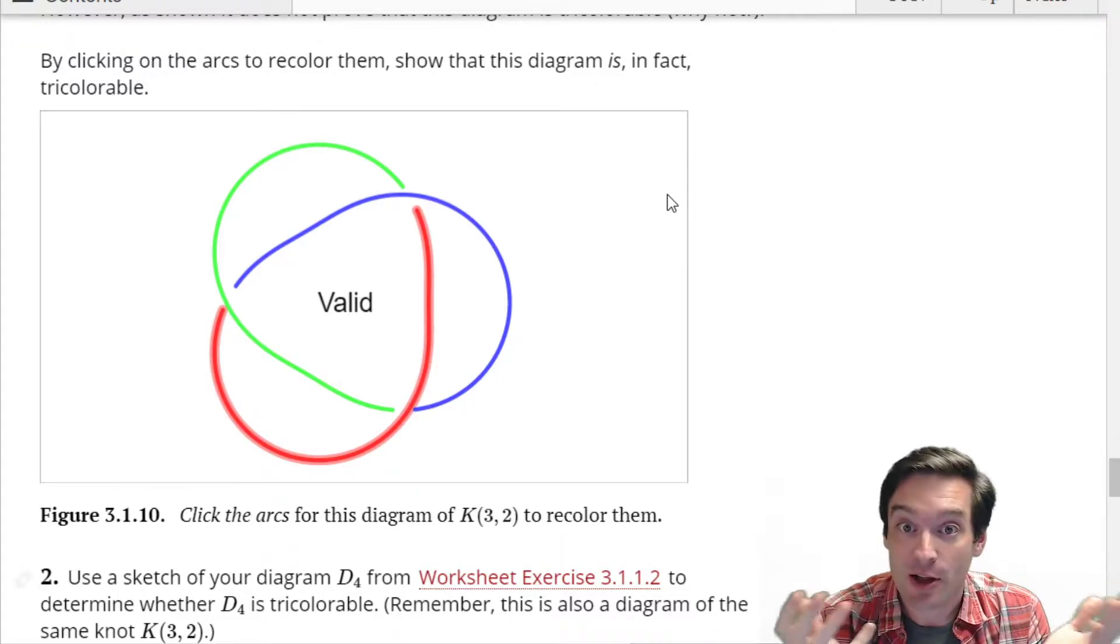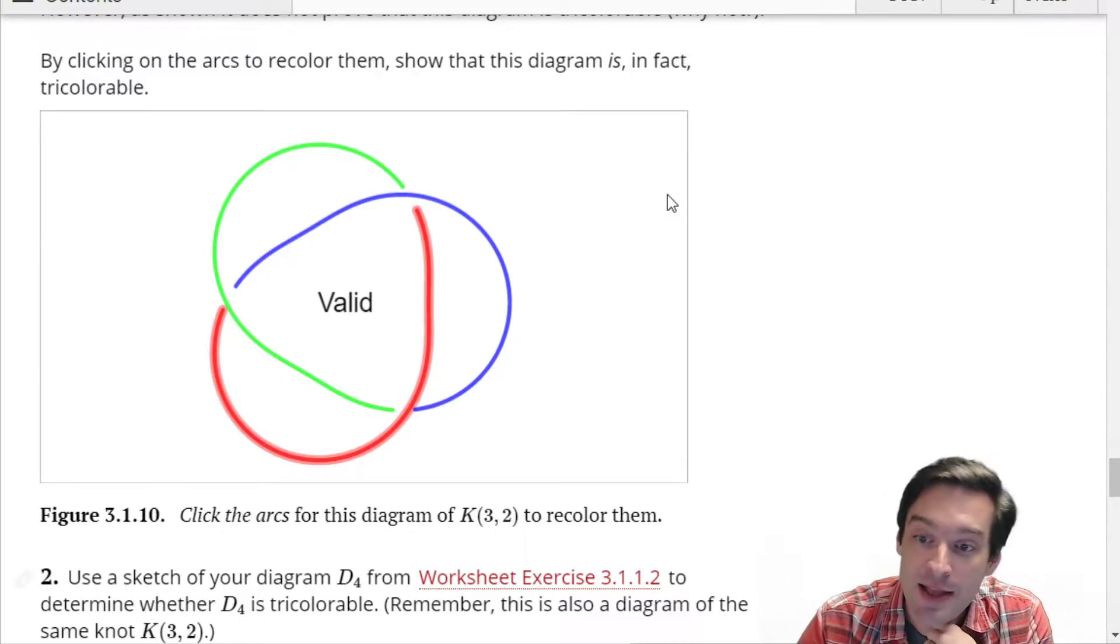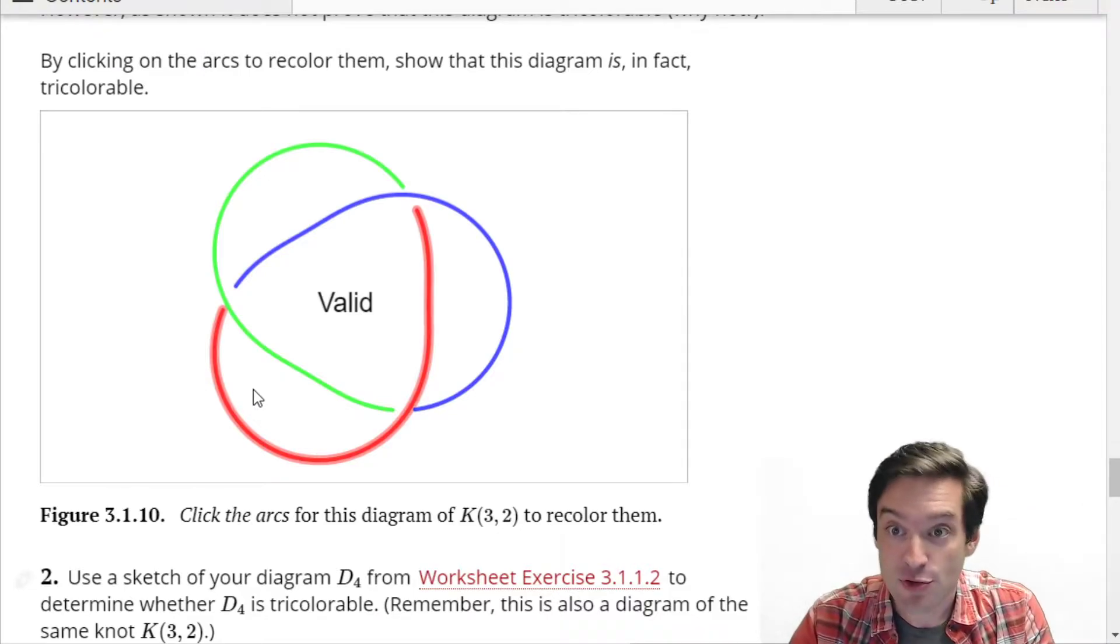But yeah, this knot's called a trefoil, tre for three crossings, right, it's a simple knot with three crossings. And so this is our reference point, and we know, based on this tricoloration, that the trefoil knot is tricolorable.